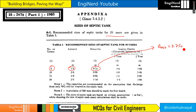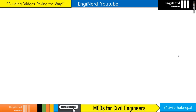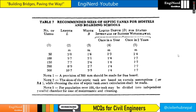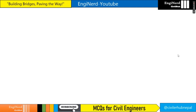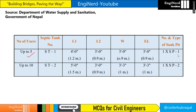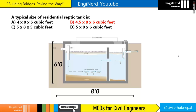One important point: the minimum width equals 0.75 meter for the septic tank. This is also an important MCQ detail. Similarly, this same IS code provides sizes for hostels and boarding schools. So our final answer for this question is Option B: 4.5 by 8 by 6 cubic feet. Thank you for watching.